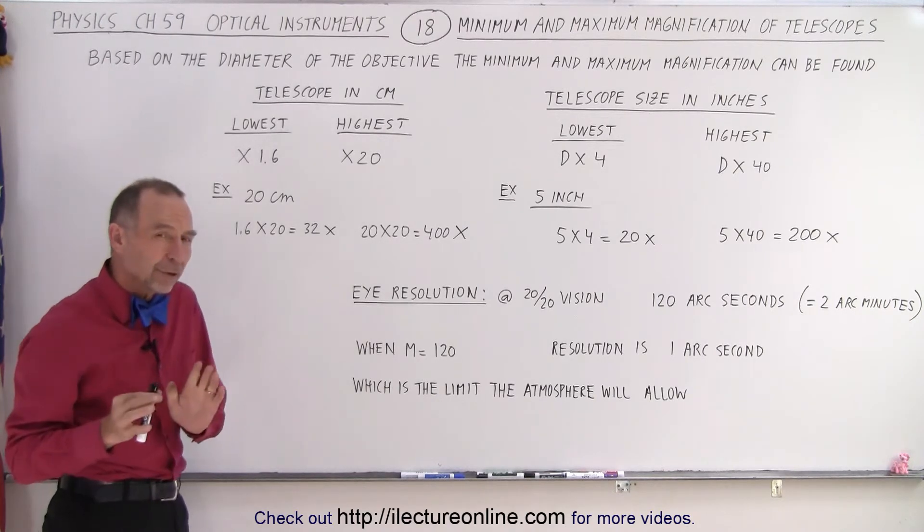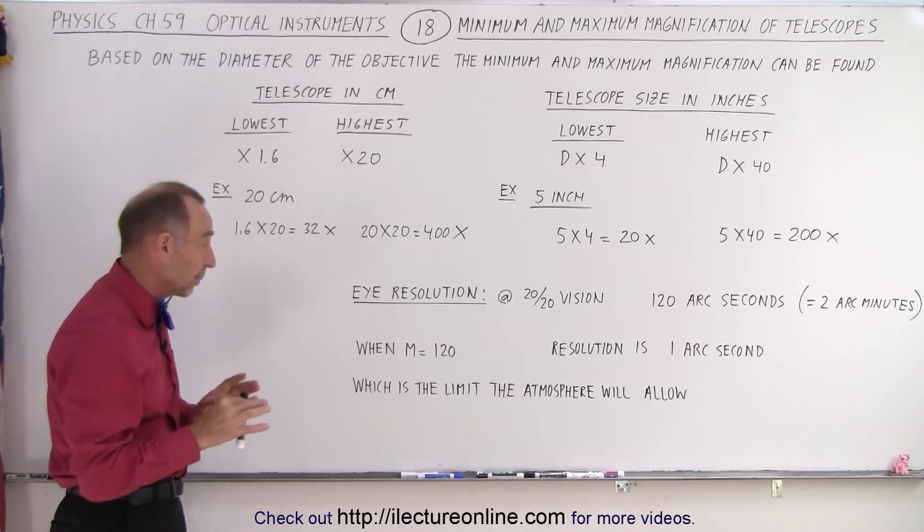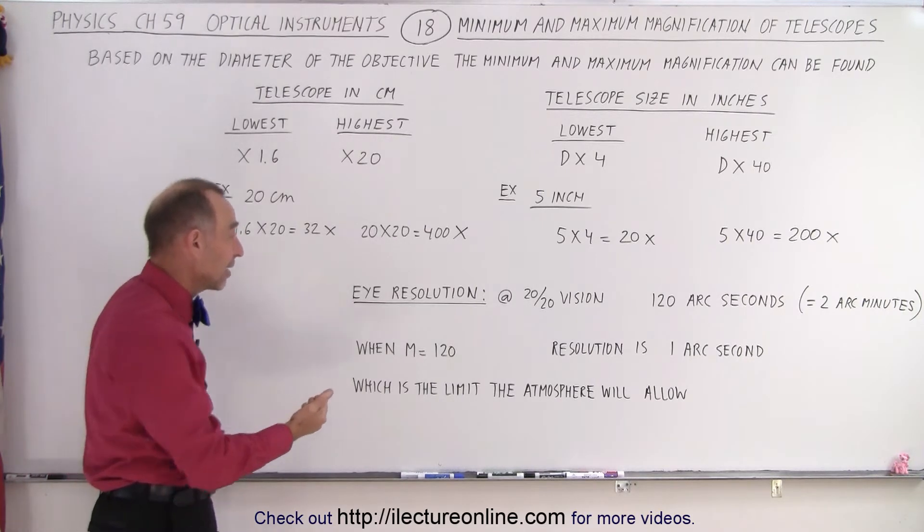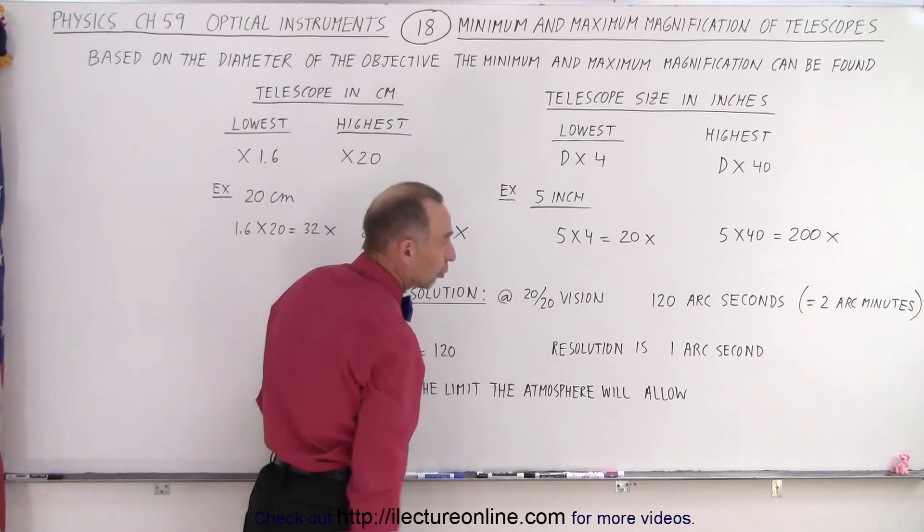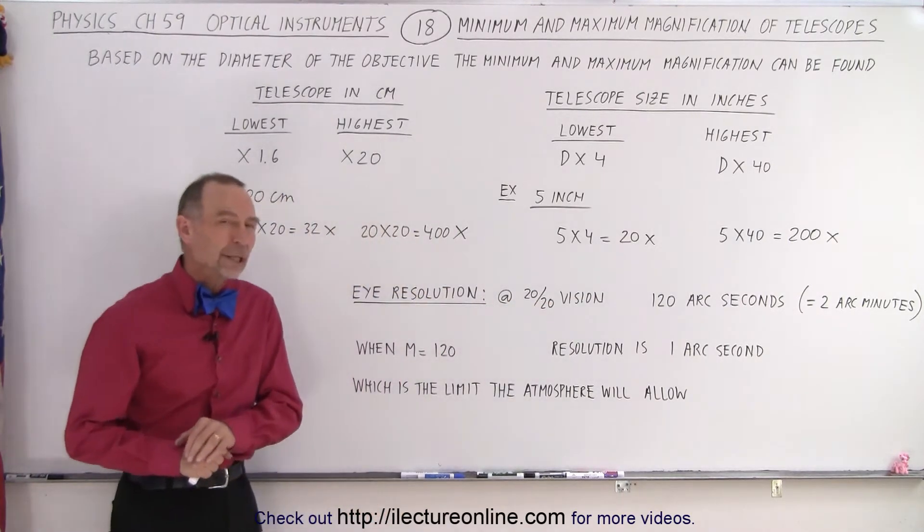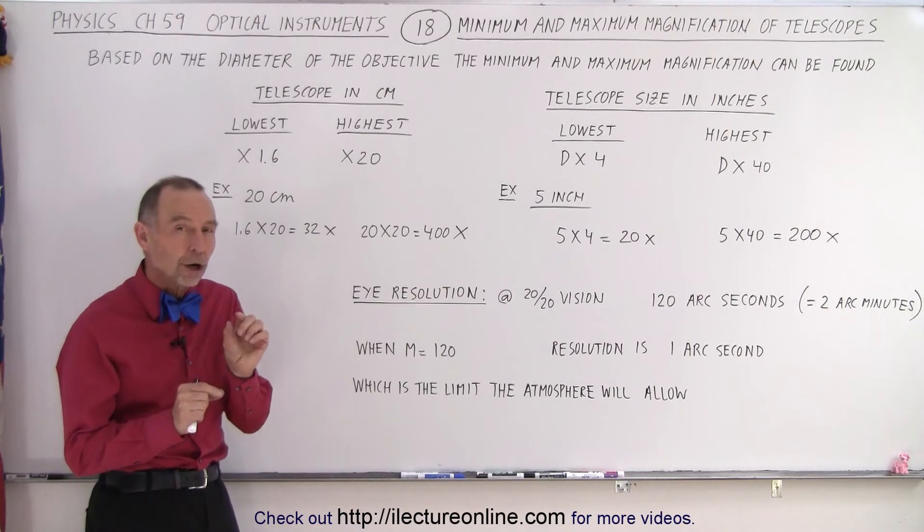So if you want to compare the resolution of a telescope compared to the resolution with the naked eye, let's say you have healthy eyes, good eyes that have 20-20 vision, your resolution with the eyes is about 120 arc seconds, which is about 2 arc minutes.